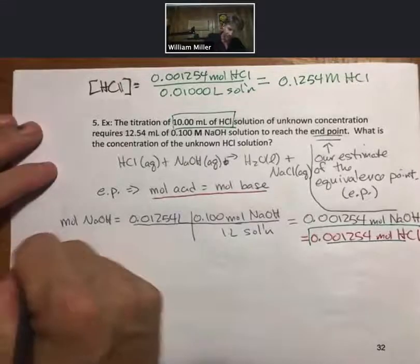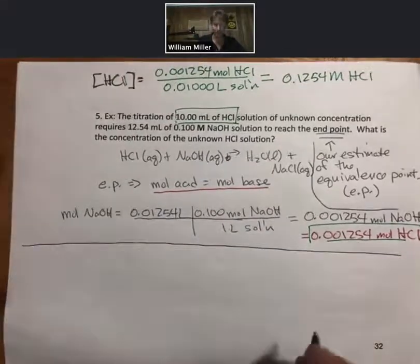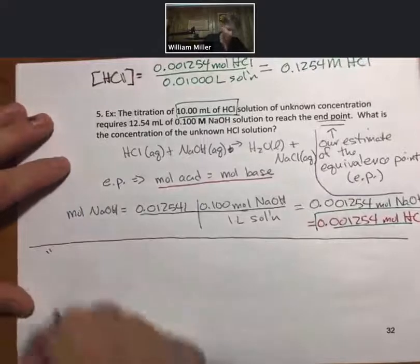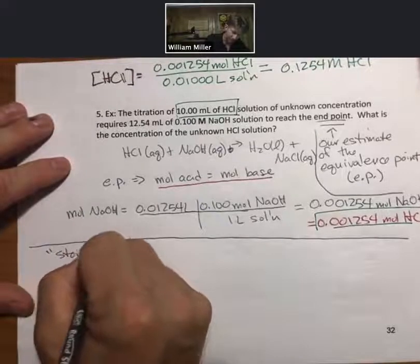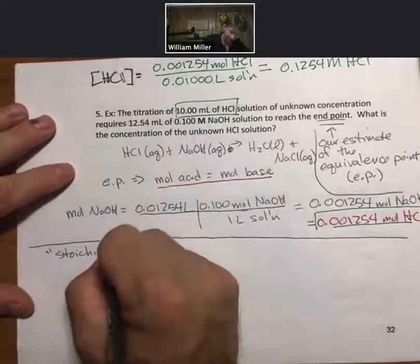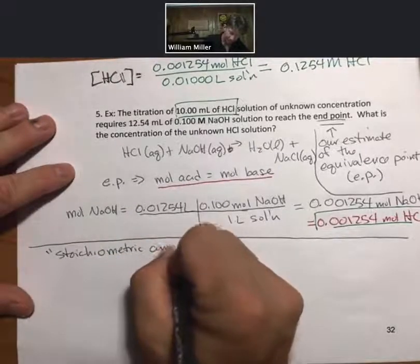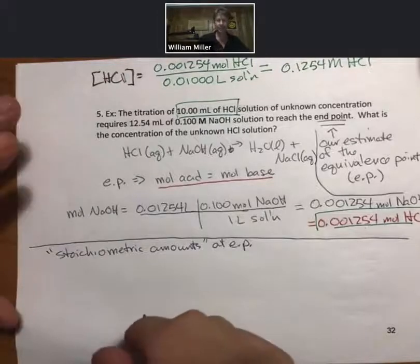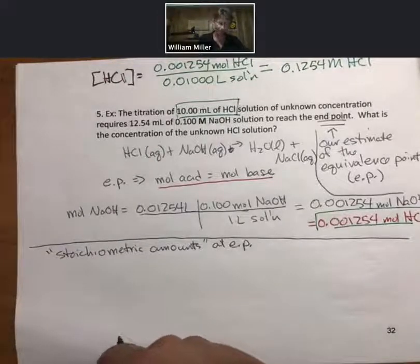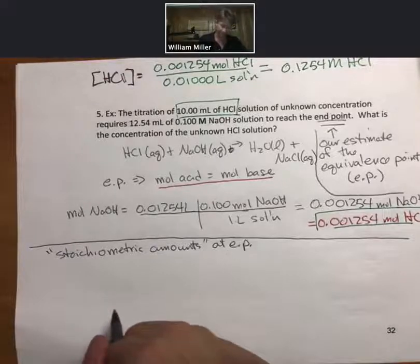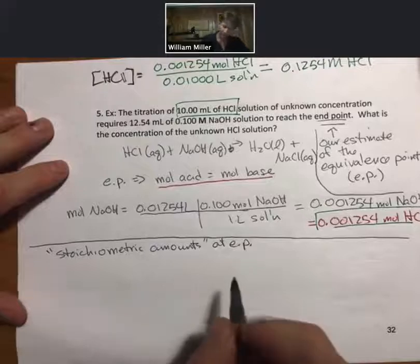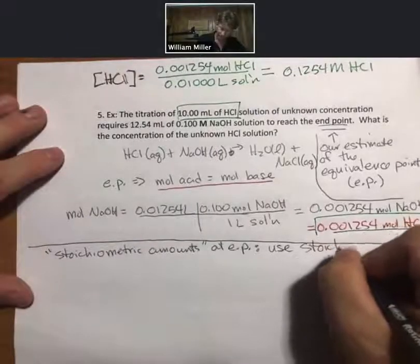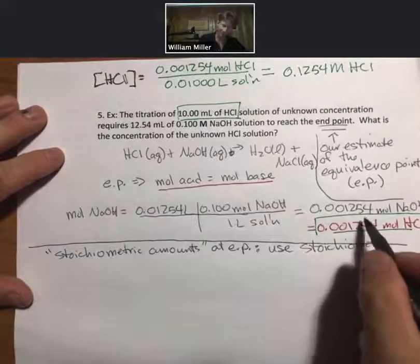I said there's a second way to solve it. And typically it is more general. We will use this second way in the example on the next page. This deals with the fact that at the equivalence point you've added stoichiometric amounts. Another way of saying that is both of them are limiting reactants. We can actually use stoichiometry.